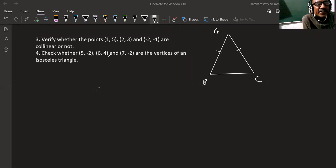So if we have the vertices, we will check the vertices. A is (5, -2), B is (6, 4), C is (7, -2). I will find these three distances.